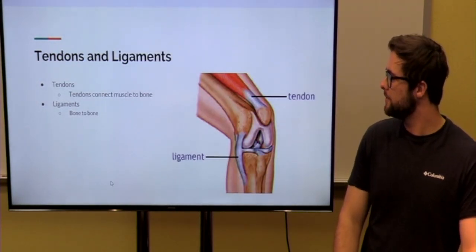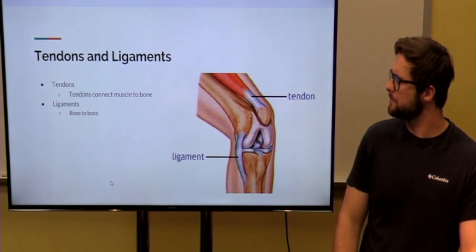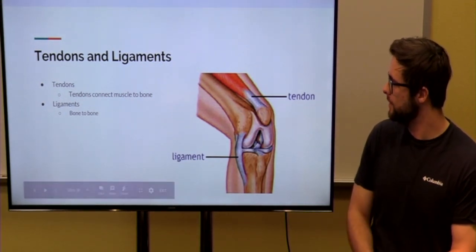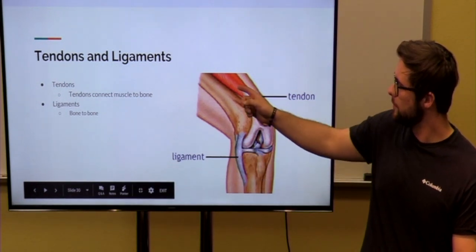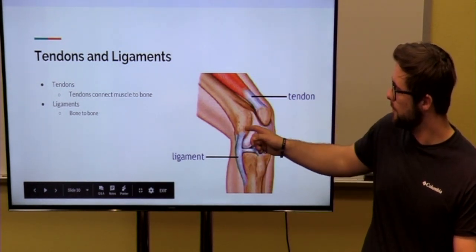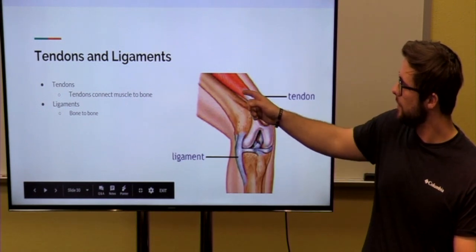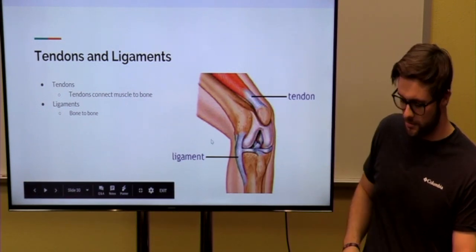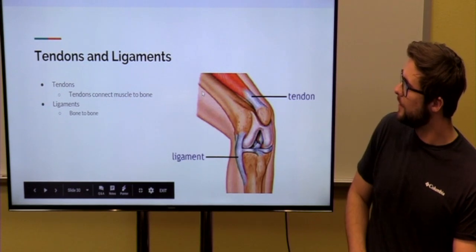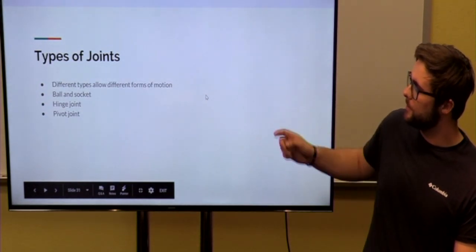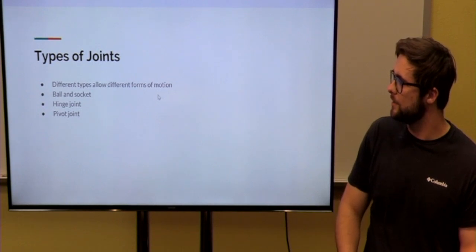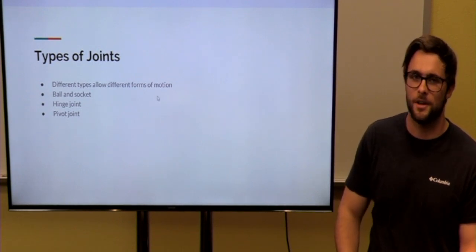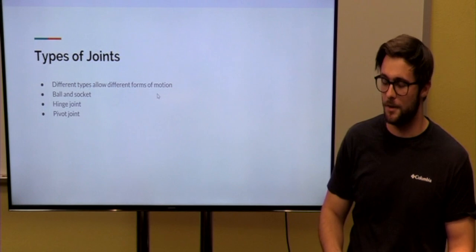Our joints have two different types of connecting points. There's tendons and ligaments. Tendons are your bone to your muscle, and then ligaments are your bone to bone. Your tendons are your key points that we're going to talk about here. In our body, we have three different kinds of joints. You have your ball and socket, your hinge joint, your pivot joint. We actually have six joints, but today we'll just be talking about three of them.